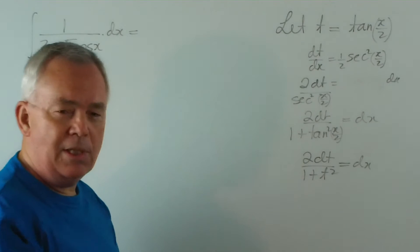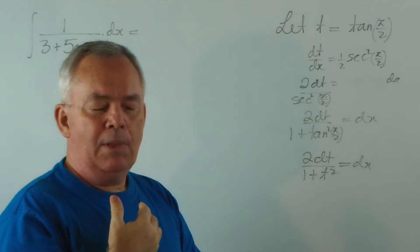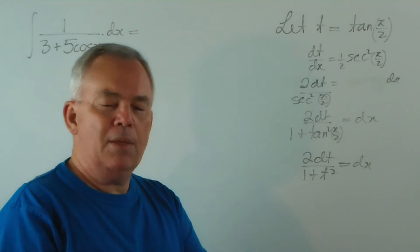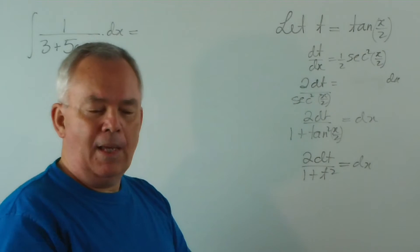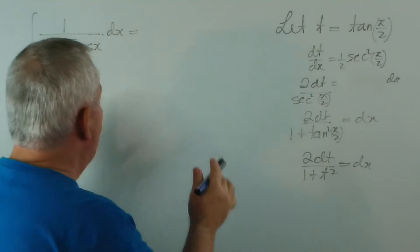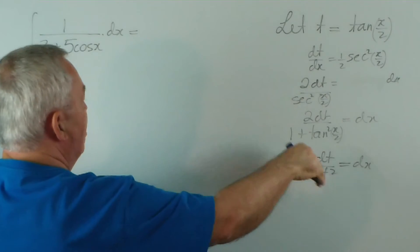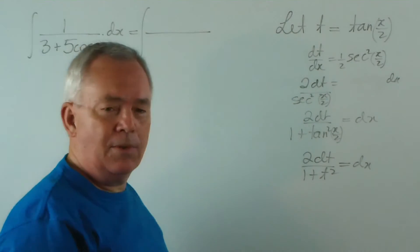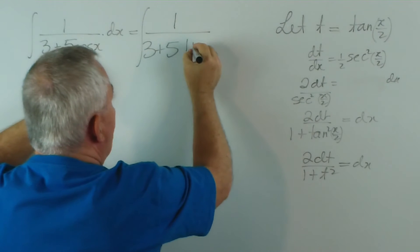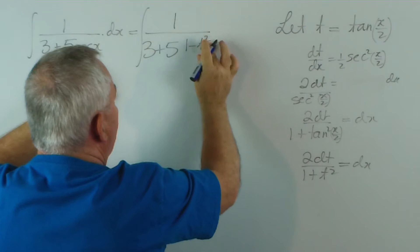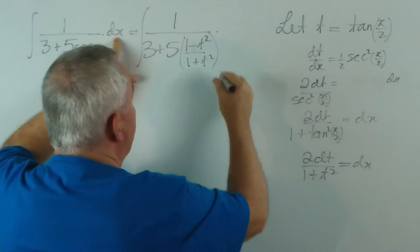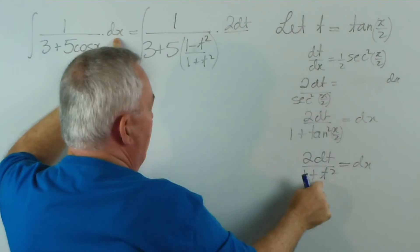Now, cosine of x is 1 minus t squared on 1 plus t squared. After this series is finished, I'm going to produce a series of videos describing particular methods of evaluating integrals and looking at particular standard integrals. I'll deal with all this half-angle notation quite thoroughly then. But for the moment, you'll just have to trust me. Cosine of x will be 1 minus t squared on 1 plus t squared. And dx we're going to replace with this expression, 2 dt on 1 plus t squared.